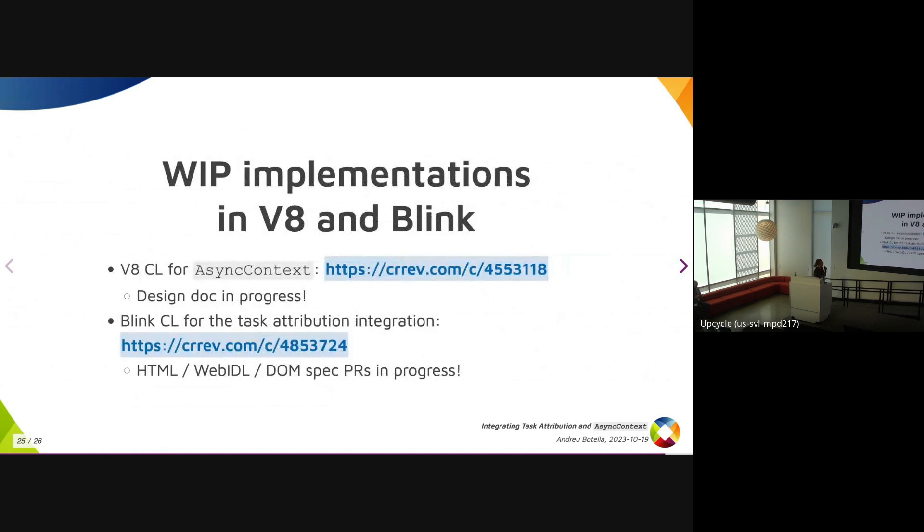I have work in progress implementations with a CL in V8 for async context. The design doc is in progress and has been for months, but working on it. And there's a Blink CL for the integration with task attribution. And we have spec pull requests on the whatwg side in progress. The task attribution CL is constantly in a state of merge conflict, because in order to be able to pull the V8 CL, I have to change the deps and that breaks every time that V8 gets upgraded. I'm not sure if anyone knows a way to fix that, but yeah, just so you know that it's in a constant state of merge conflict. And yeah, that's it. I guess there's not much time for questions, but if you... yeah, I was hoping to have more of an open floor, but sure.